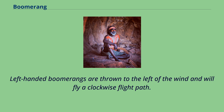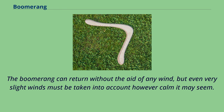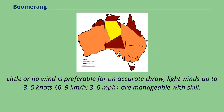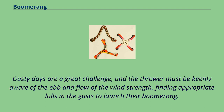The trajectory is either parallel to the ground or slightly upwards. The boomerang can return without the aid of any wind, but even very slight winds must be taken into account. Little or no wind is preferable for an accurate throw; light winds up to 3–5 knots are manageable with skill. If the wind is strong enough to fly a kite, it may be too strong without a skilled thrower using a boomerang designed for stability in stronger winds. Gusty days are a great challenge, and the thrower must be keenly aware of the ebb and flow of wind strength, finding appropriate lulls in the gusts to launch.